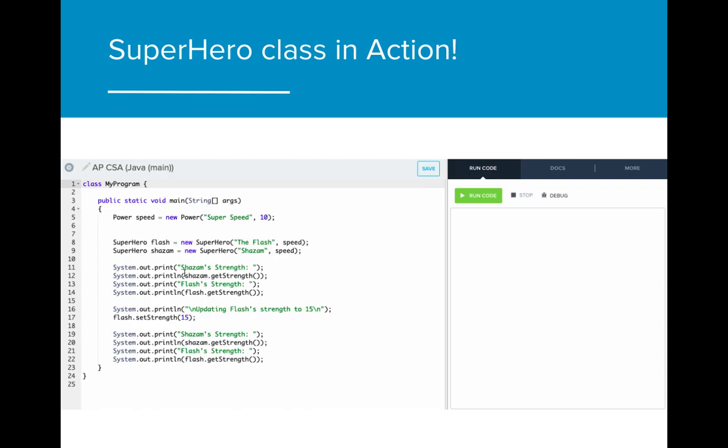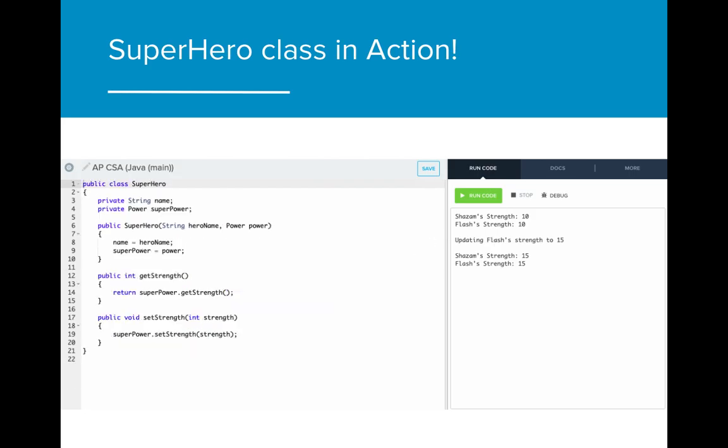Here's a live demo of the superhero class. In the initial run of the program, we have superpower equals power. Notice that when run code is hit, the value of strength also changes for shazam. When we change the initialization of superpower to initialize a new power object, when we run the program again, we get the correct value for shazam.